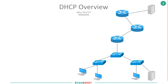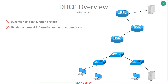Let's jump into it and have a discussion around DHCP, a big overview of how it works and of course why we need it as engineers. Once we understand everything from a high-level point of view, we can jump into Packet Tracer and start configuring DHCP. It's called the Dynamic Host Configuration Protocol — an acronym you need to remember — and it hands out network information to clients automatically.